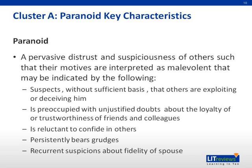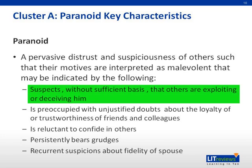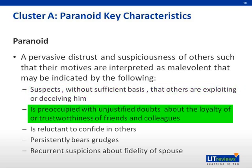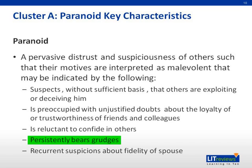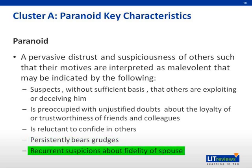The key characteristics of an individual with paranoid personality disorder: they typically suspect, without much basis, that others are exploiting or deceiving them, and are often preoccupied with unjustified doubts about the loyalty or trustworthiness of friends or associates. They are reluctant to confide in others due to unwarranted fear that information will be used maliciously against them. They read hidden demeaning or threatening meanings into benign remarks or events, persistently bear grudges, and are unforgiving of insults, injuries, or slights. They perceive attacks on their character or reputation not apparent to others and are quick to react angrily or counterattack. They have recurrent suspicions, without justification, regarding the fidelity of a spouse or sexual partner.